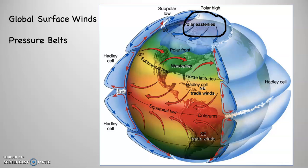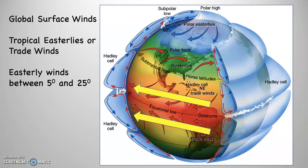Remember, we name winds by the direction they come from, not the direction they're going to. Between 5 and 25 degrees in both hemispheres — 5 degrees north to 25 degrees north and 5 degrees south to 25 degrees south — there is a consistent and general easterly flow of wind. In other words, the air is blowing out of the east. We call these winds the tropical easterlies or the trade winds, found in both hemispheres between 5 and 25 degrees.